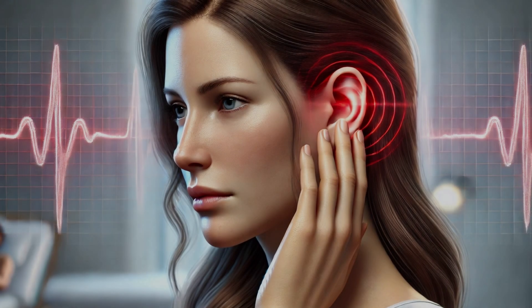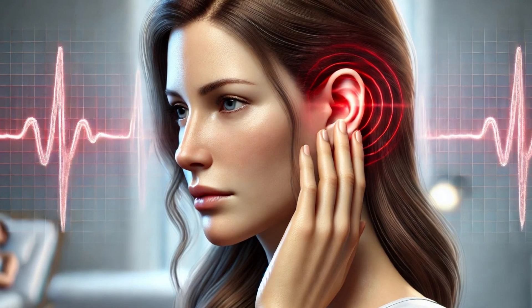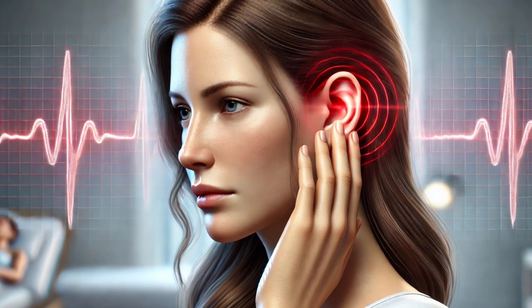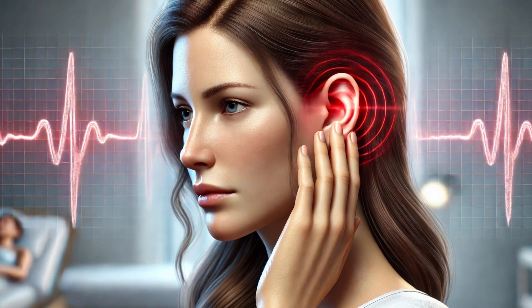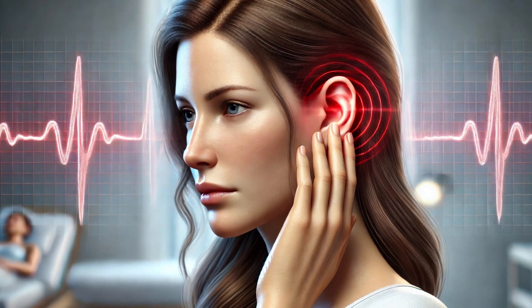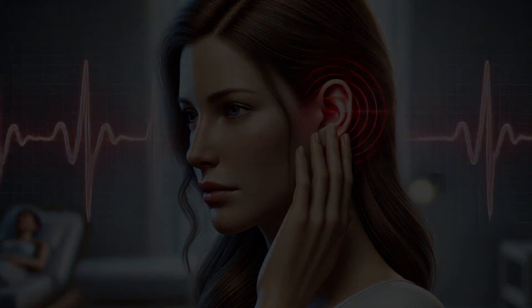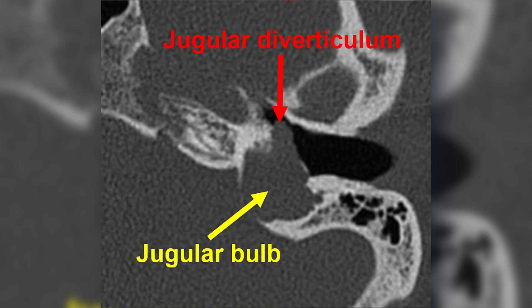A 39-year-old female patient with left pulsatile tinnitus. A computed tomography of the temporal bone was performed. On axial section in bone window of the left temporal bone, a high jugular bulb is identified, accompanied by a sac-like lesion protruding anteriorly into the middle ear cavity, a finding compatible with a jugular diverticulum.